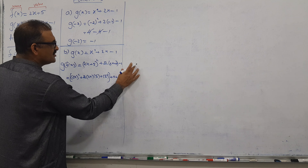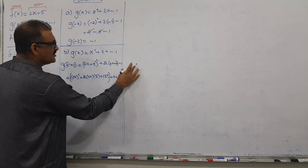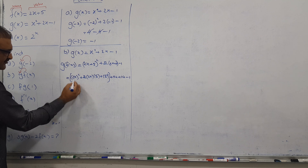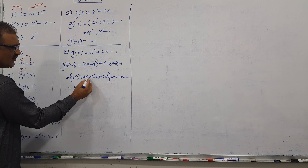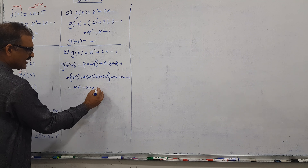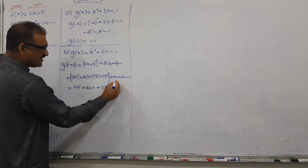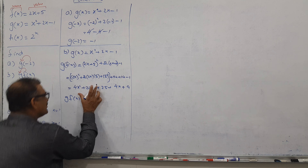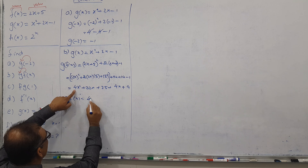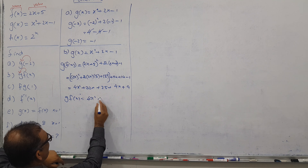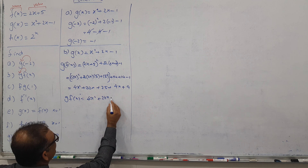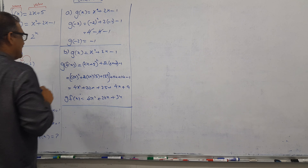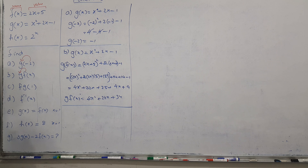Continuing the simplification: 2 squared gives 4, X squared gives 4X squared. 2 times 4 times 5 gives 20X, and 25 appears. Then we have plus 4X and minus 1. Combining like terms: 20X plus 4X gives 24X, and 25 minus 1 gives 24. So G of F of X equals 4X squared plus 24X plus 34. Part B is finished.